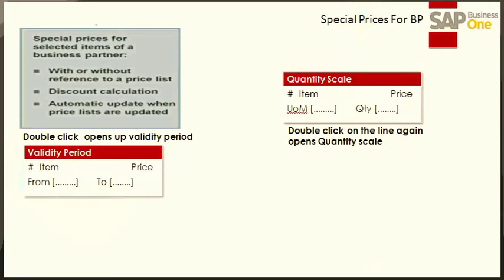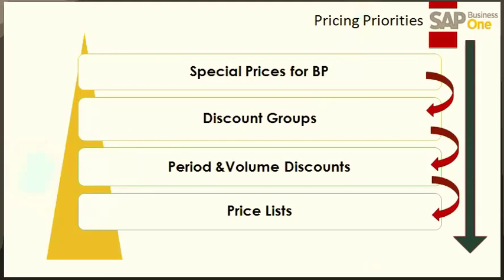Any item belonging to a unit of measure group will allow you to set prices by units belonging to that UOM group. Once you have defined a special price for one item, you can choose to copy discounts to the date range and percentage for other items as well. Special prices defined for a business partner override all other prices in a marketing document.